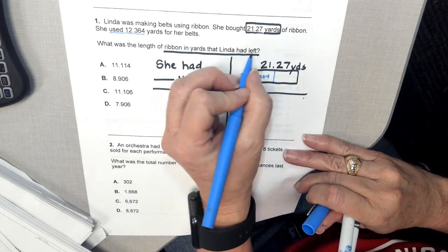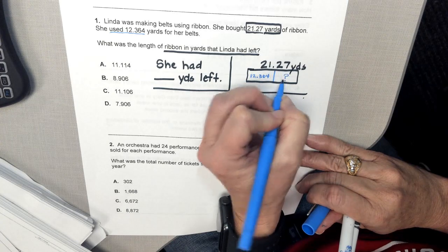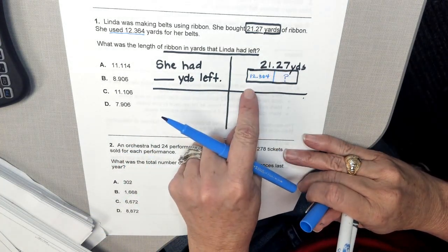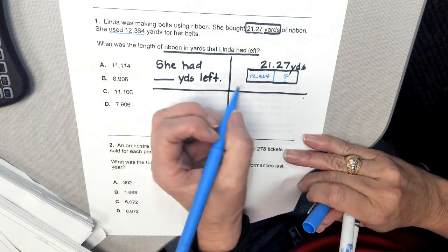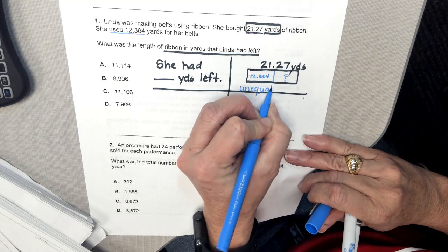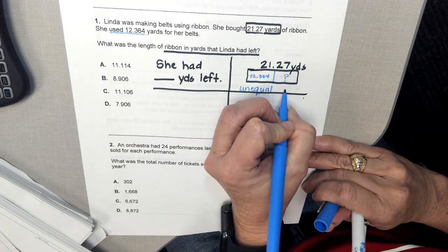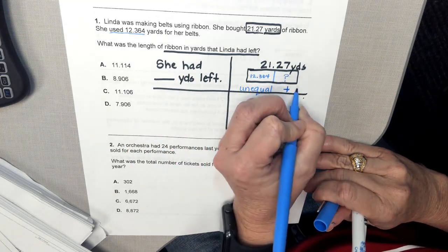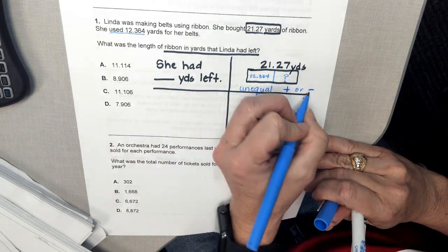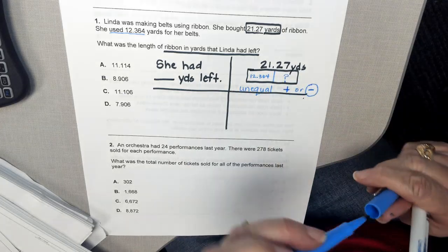We want to know what is left. This piece right here is what is left. So when I think to myself, do I have equal or unequal amounts? I have unequal amounts. And that means that my choices are either to add or subtract. And since I'm wanting to know what is left, I'm definitely going to be subtracting.